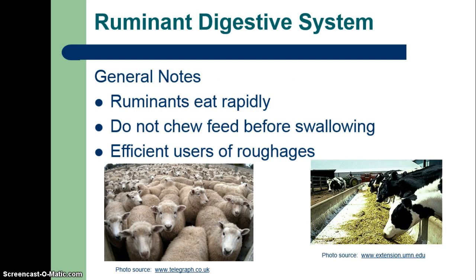Ruminant digestive systems. Ruminants tend to eat very rapidly — in the scheme of fight versus flight or survival, ruminants would eat very quickly, find a safe place, and then later bring their food back up to be further digested. That instinct and adaptation have not been lost. They are very efficient users of roughages, and the primary component of a ruminant diet is going to be some type of roughage, whether that's hay, silage, haylage, or some other type of fodder.